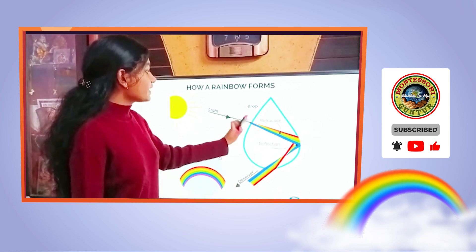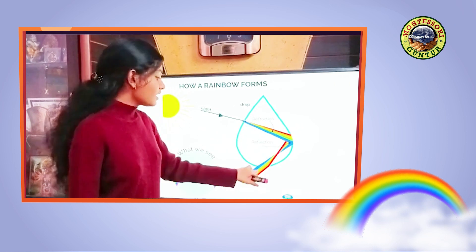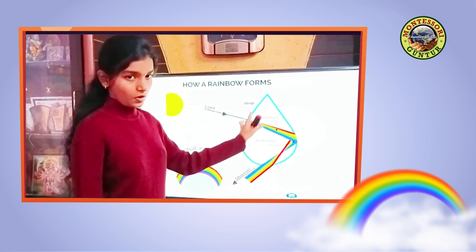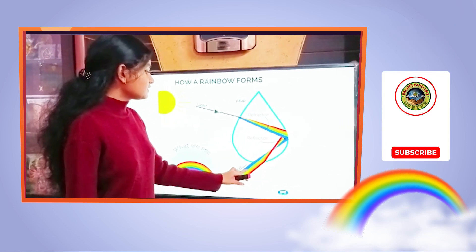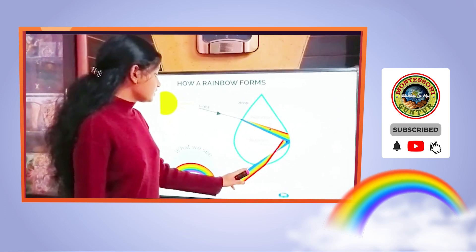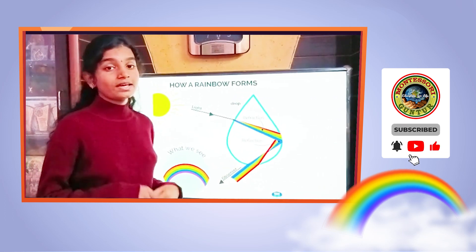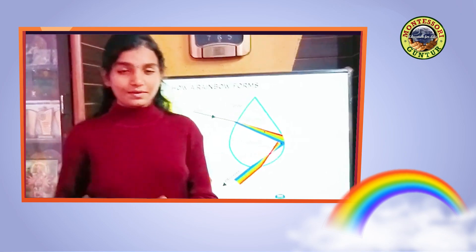The raindrop again reflects the different colors when they come out of the water drop. After leaving the water drop, these different colors reach our eye. Thus we can see a rainbow. Thank you very much.